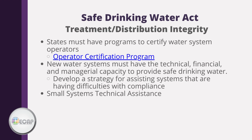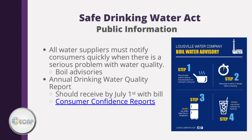States must have programs in place to certify water system operators. New water systems must have the technical, financial, and managerial capacity to provide safe drinking water, and there are programs to assist systems having compliance difficulties and provide additional technical assistance to smaller systems. All water suppliers are required to provide quick notification to the public when having issues such as boil advisories. You should receive a consumer confidence report every July 1st with your bill, providing information on contaminant levels, any issues, and more. Know what you are drinking.